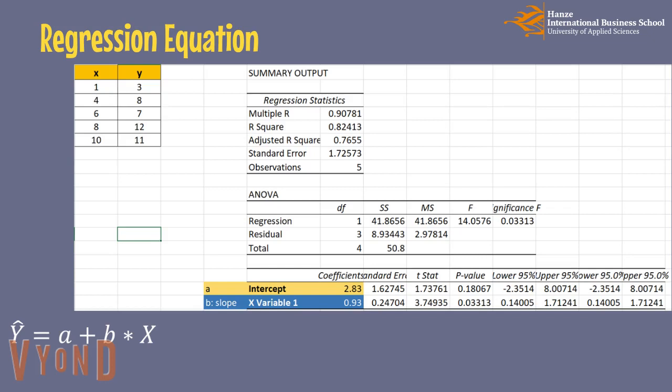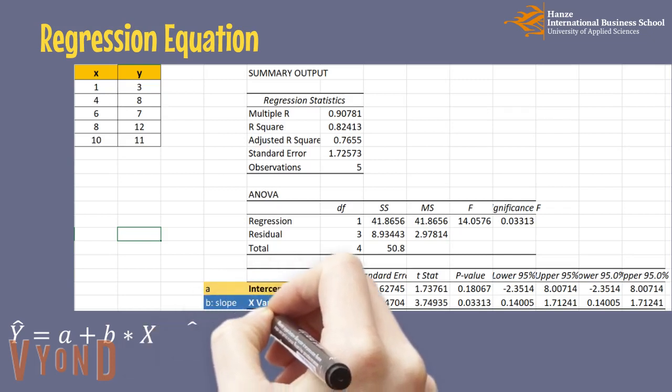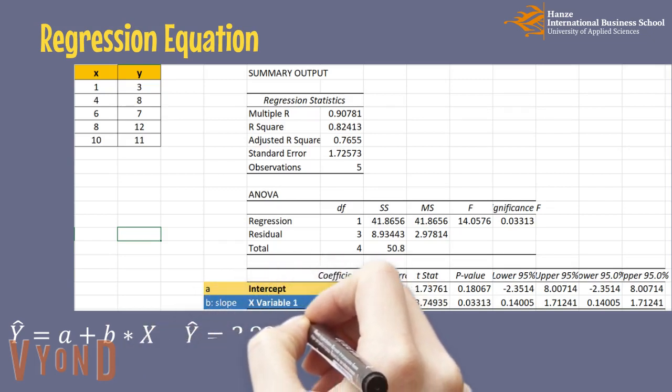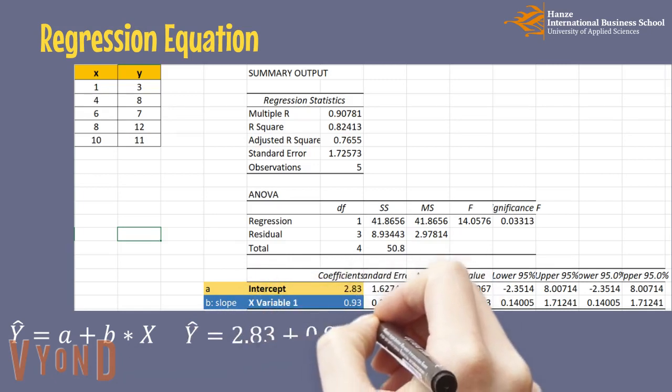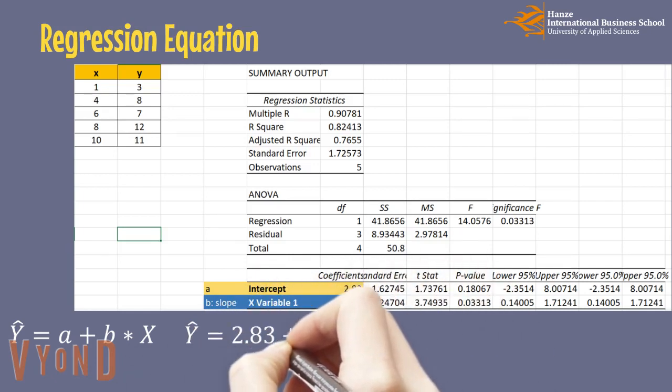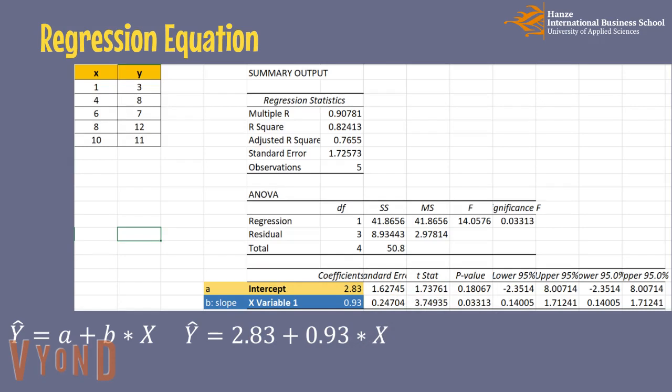In this Excel output, we find that the intercept is 2.83 and the slope is 0.93. Then we can form our own formula: y-hat equals 2.83 plus 0.93 times x. In case we know x is 15, we can predict what the y should be. That is 16.78.